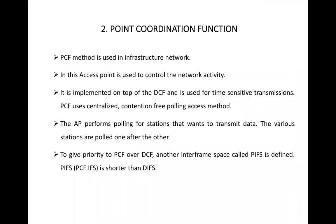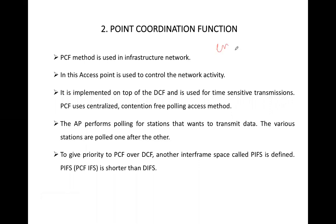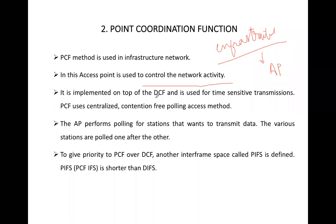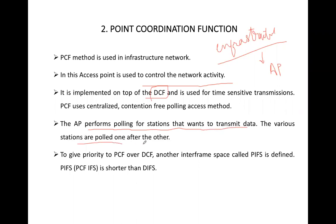The second function is Point Coordination Function (PCF), used in infrastructure networks. In infrastructure, access control responsibility lies with the access point. The access point controls all network activity. PCF is implemented on top of DCF and has higher priority. The access point performs polling for stations that want to transmit data — various stations are polled one after the other and allocated transmission time.